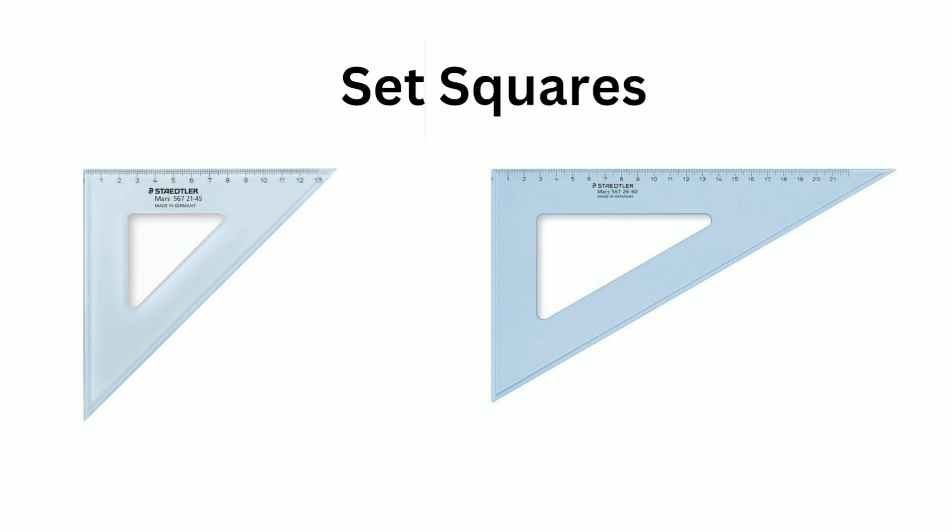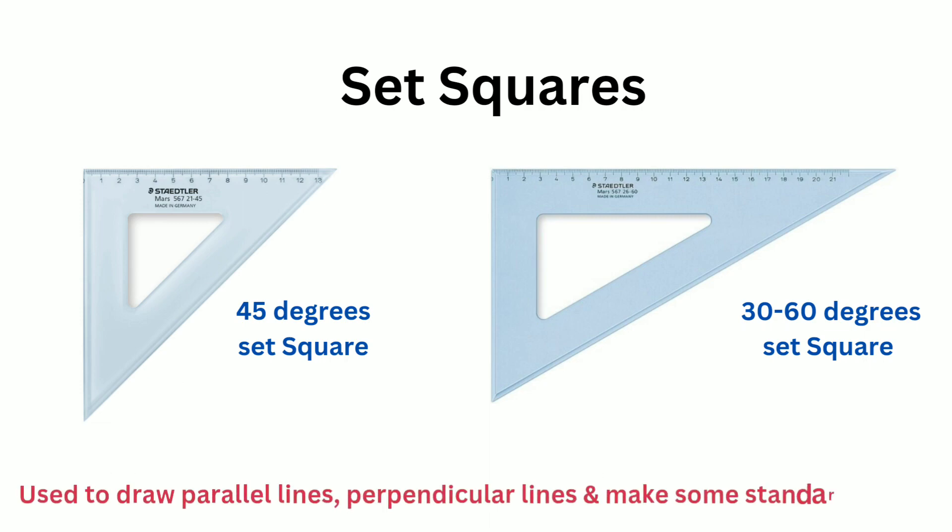Set squares. There are two kinds of set squares available in the toolbox. One has an angle of 45 degrees and the other has 30 to 60 degrees. With the help of set squares, we can draw parallel lines, perpendicular lines and make some standard angles.